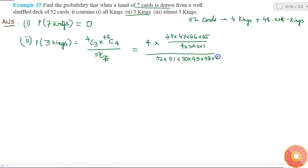Divided by 7 factorial, 7 into 6 into 5 into 4 into 3 into 2 into 1. So here I can cancel 48, 47 and 46 from the numerator and denominator.